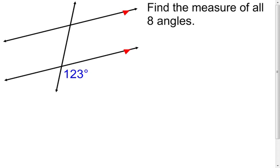In my next example, I have two parallel lines again and a transversal. I want to find the measure of all eight angles, and I'm only given one. I'll start with something that's not new — vertical angles are congruent. Therefore, this angle is going to have to be 123 degrees.